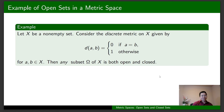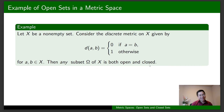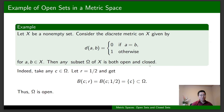Now I'm going to talk about a different example. We consider an arbitrary non-empty set X with the discrete metric on X given by this formula. It is very interesting that in X with this metric, any subset Omega is both open and closed. Let's go ahead and work on the proof.